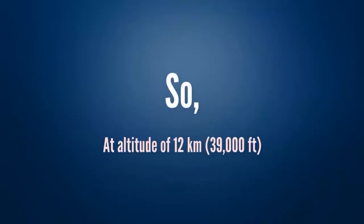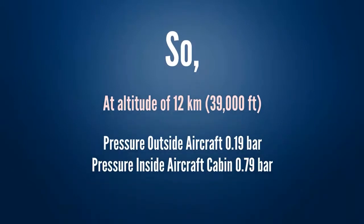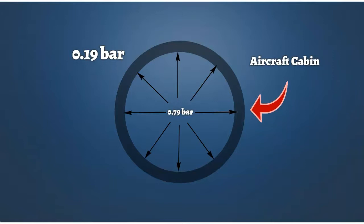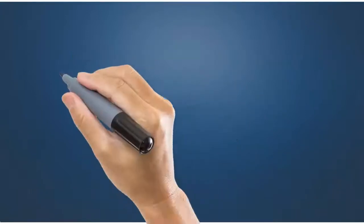So at altitude of 12 km, pressure outside aircraft is 0.19 bar and pressure inside aircraft cabin is 0.79 bar. This pressure difference produces stress on fuselage.